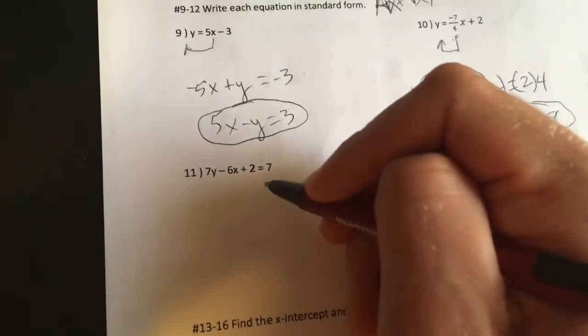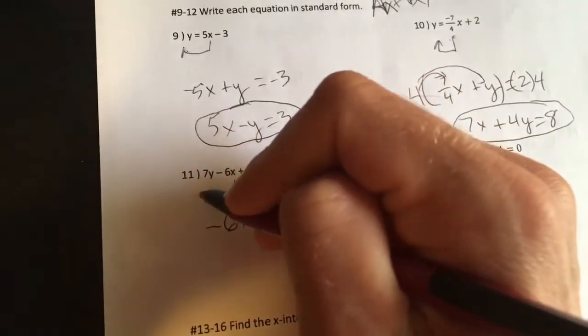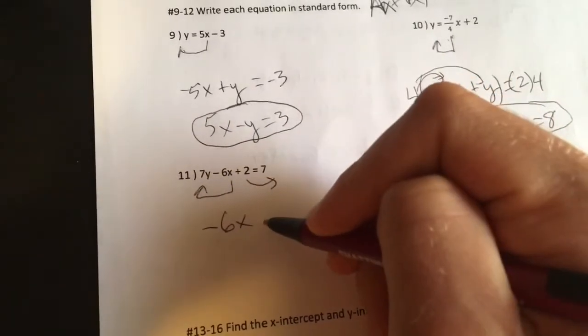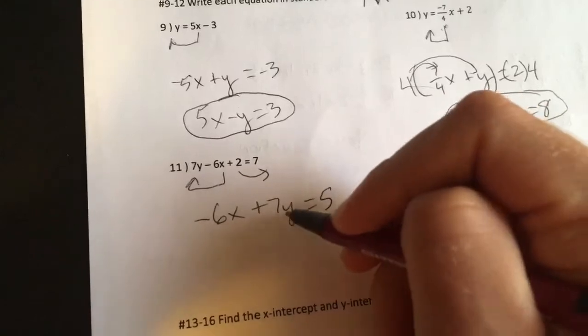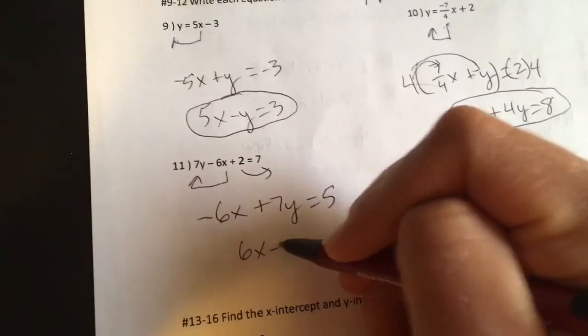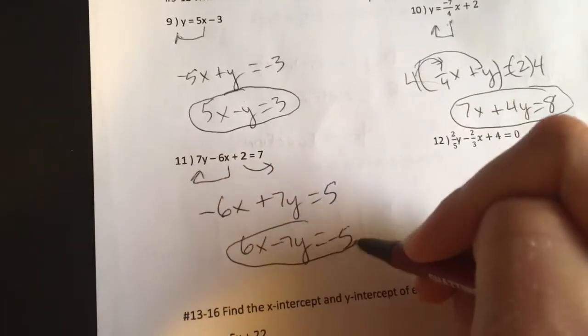All right. On this next one, folks, while we move the 2 over, I got... Now, x wants to go first. It's a gentleman. Negative 6x plus 7y equals 5. No fractions here, but x has got to be positive. 6x minus 7y is a negative 5. Puts us in proper standard form.